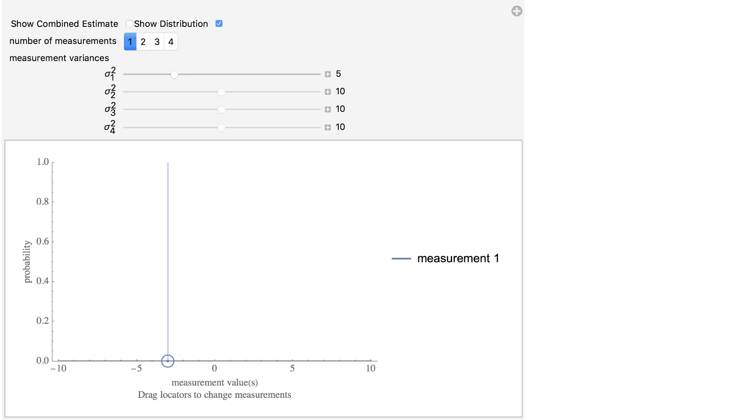So what happens if we have two measurements that are different? Here we have one measurement of negative three and another measurement of five. The true measurement is probably going to be somewhere in between these two measurements. One thing you can try is to average the measurements.